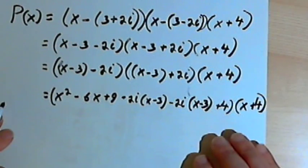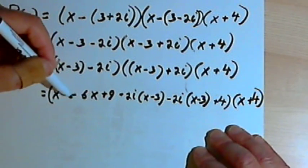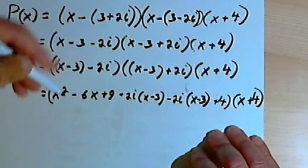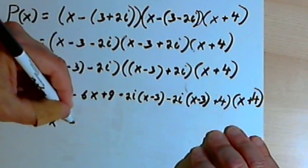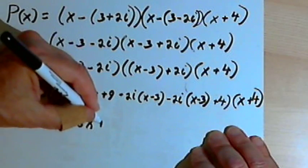Let's put that whole thing in parentheses. And that's still going to get multiplied by x plus 4. Now I can clean this up quite a bit.